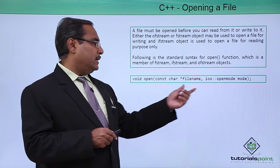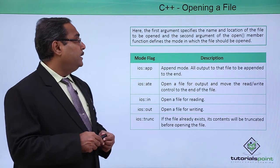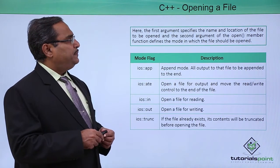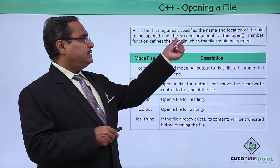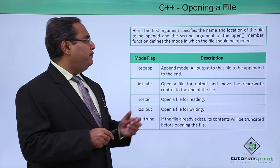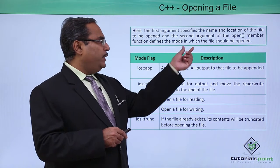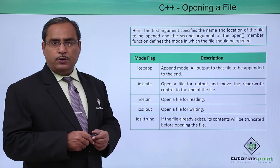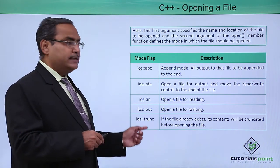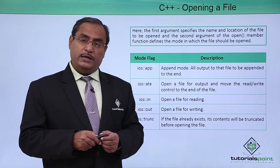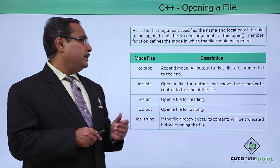The first argument specifies the name and location of the file to be opened, and the second argument of the open member function defines the mode in which the file should be opened. For better understanding, let us go through the mode flags. Here we have a list of mode flags we are going to discuss one by one.